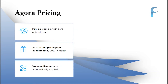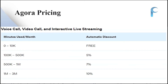For Agora's pricing plan, you pay as you go. The first thousand participant minutes are free every month. Volume discounts are automatically applied — for zero to ten thousand minutes, Agora provides them free each month. After that you have to pay, and for 100k to 500k minutes you get a five percent discount.